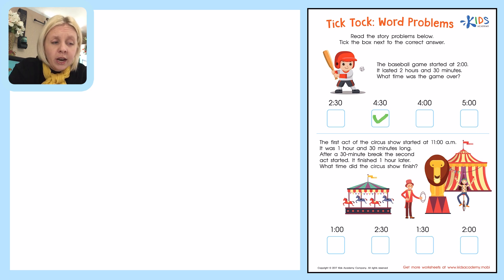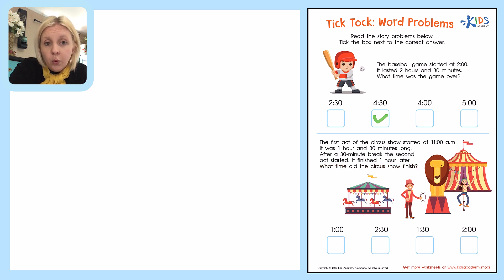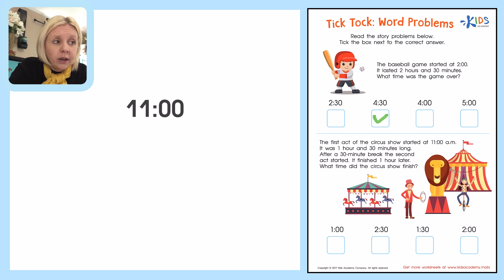Now let's do the next one. It says the first act of the circus started at 11 o'clock a.m. It was 1 hour and 30 minutes long. After a 30-minute break, the second act started. It finished 1 hour later. What time did the circus show finish? So let's set this up like a regular number problem. We've got 11 o'clock a.m., and I'll write the a.m. off to the side just in case.